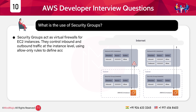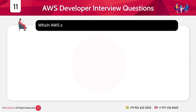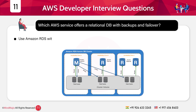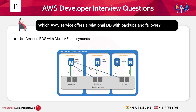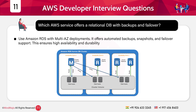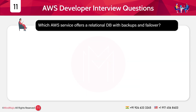Intermediate level, first category: scenario-based questions. Question 11: Which AWS service offers a relational database with backups and failover? Answer: Use Amazon RDS with Multi-AZ deployments. It offers automated backups, snapshots, and failover support, ensuring high availability and durability for transactional applications.